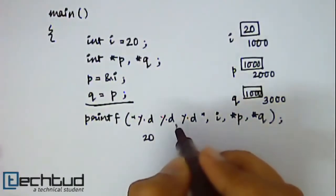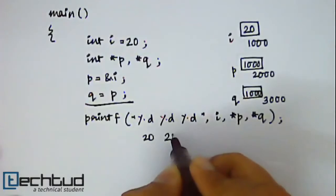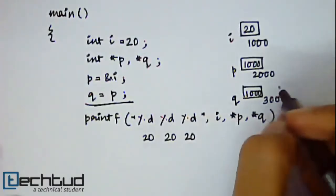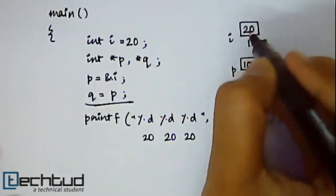So for all these three cases, 20 will be printed, because value of this 1000 memory location is 20.